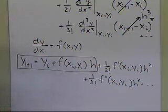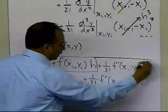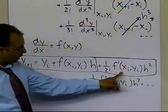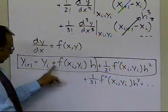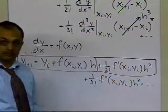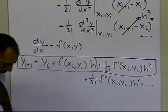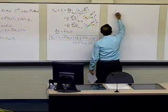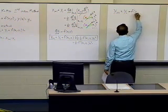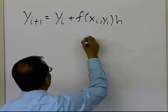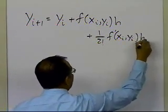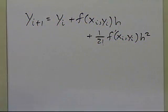If we want more accurate results, we add one more term — that's why it's called the second-order method, because we're adding the second-order term. So the Runge-Kutta second-order method is based on: y_i+1 = y_i + f(x_i, y_i)·h + (1/2!)·f'(x_i, y_i)·h². That's the Euler's method part plus the additional second-order term from the Taylor series.